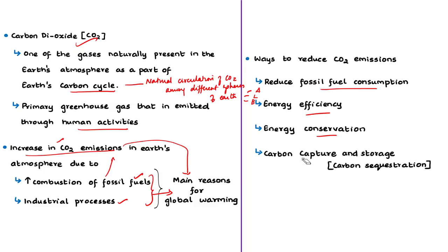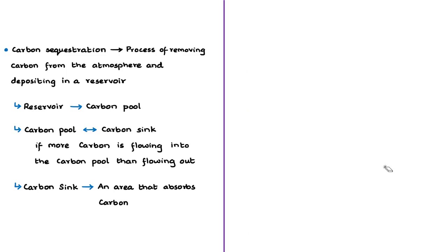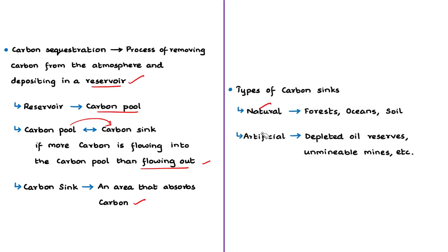One of the other ways to reduce CO2 emissions is carbon capture and storage, also known as carbon sequestration. Carbon sequestration is the process of removing carbon from the atmosphere and depositing it in a designated place called a carbon reservoir, also known as a carbon pool. A carbon sink is an area that absorbs carbon — it involves any process or mechanism that removes greenhouse gases like CO2 from the atmosphere. A carbon pool can be a carbon sink if more carbon flows into it than flows out during a given interval of time.